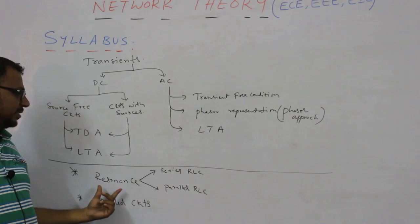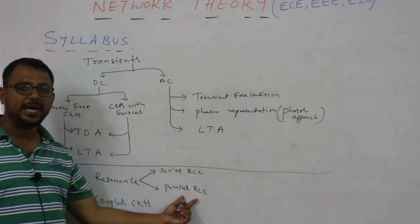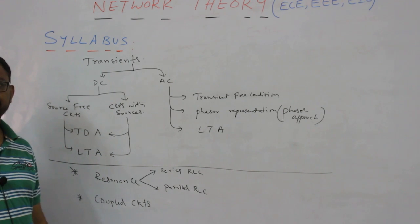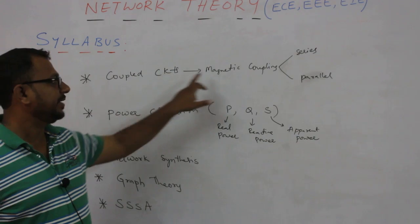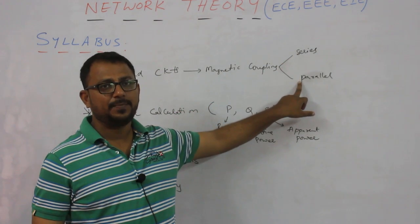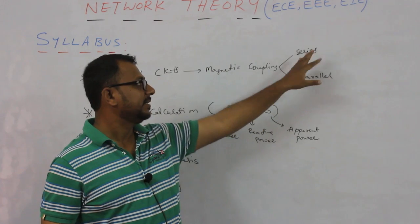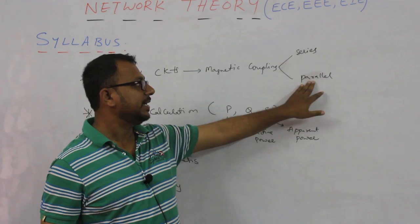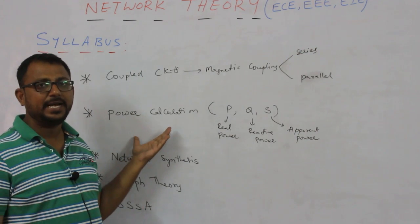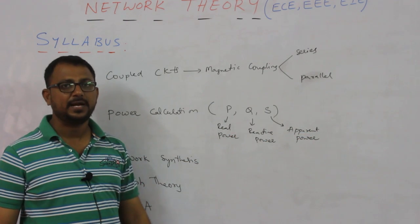After that, we are going to talk about resonance, which can occur in series RLC circuits or parallel RLC circuits. Next, we are going to study coupled circuits, covering magnetic coupling, series aiding and opposing, and parallel aiding and opposing — finding equivalent inductance for various configurations. We will also cover power calculations: real power, reactive power, and apparent power in AC circuits.